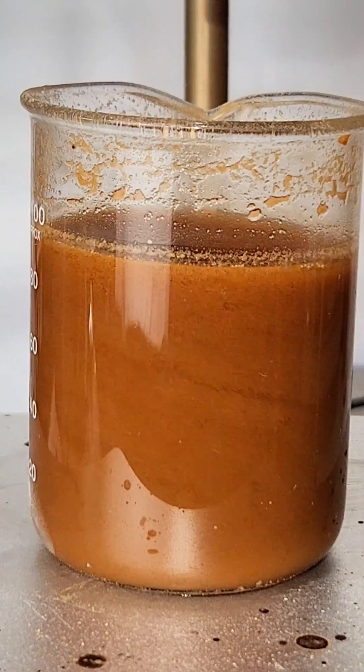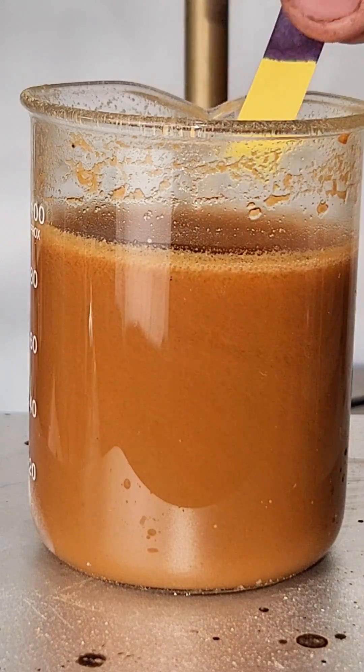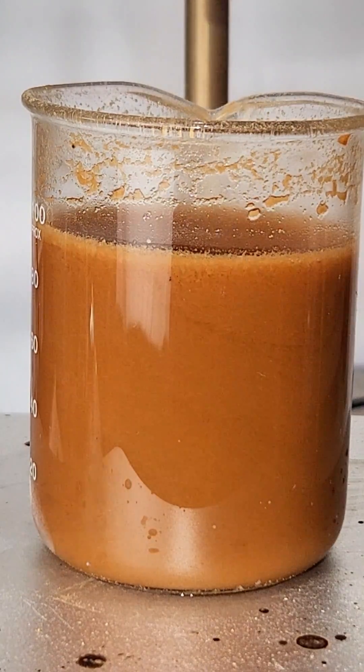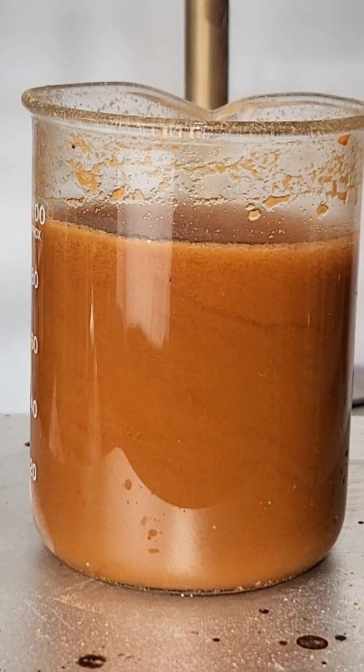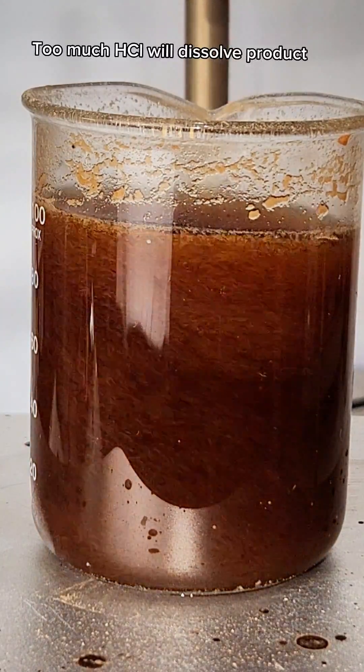Because of this the addition of too much hydrochloric acid can cause the product to redissolve which I accidentally did. Fixing this though is pretty easy and all you want to do is add some sodium hydroxide to balance your pH back up to 3.5.